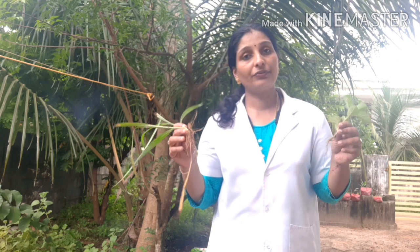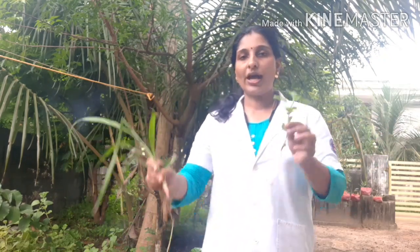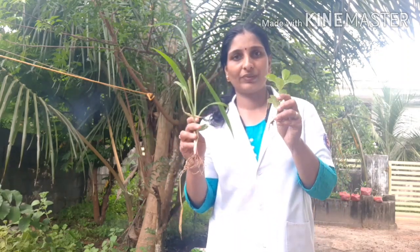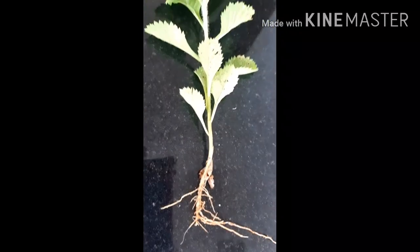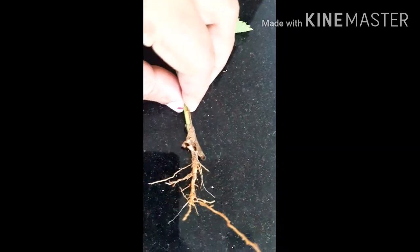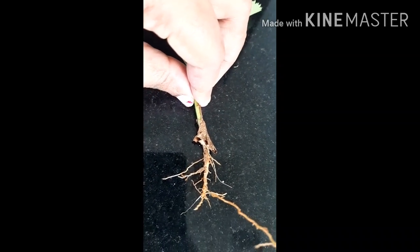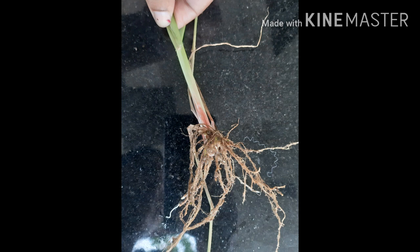Children, when you check the root of different plants, you can see the type of root is different in different plants. I have two types of plants in my hand — one is a grass type plant and another type. In this plant, you can see a main thick root with so many branches on it — this type of root is known as tap root. In this other plant, you can see a number of hair-like roots from the end of the stem — this type of root is known as fibrous root.